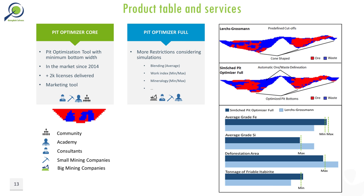SynesCAD Pit Optimizer Core performs pit optimization with the maximization of undiscounted cash flow — that is, the time variable is not considered for the optimizer's decisions. It respects minimum bottom widths, while not requiring pre-defined cut-off grades, and can be used by clients who prefer to remain with the traditional methodology. SynesCAD Pit Optimizer Full, in addition to the aforementioned functionalities, allows control of blending restrictions, production by rock type, equipment hours, manual production, and consumption of processing inputs, among others. Even though it is only a simplified version of DBS Full, SynesCAD Pit Optimizer Full is the first commercial tool to offer this sort of technology to the worldwide industry.